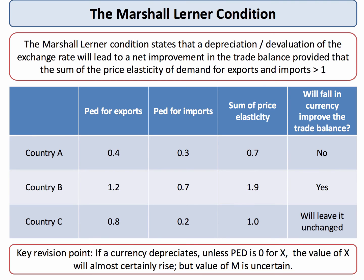A key revision point on the Marshall-Lerner condition: if a currency depreciates — for example, if the pound falls against the euro — unless the elasticity of demand for exports is zero, meaning there's absolutely no change in demand, then the value of exports we sell will almost certainly go up when the currency falls, because we're converting back into pounds instead of euros. But the value of spending on imports is uncertain. If the demand for imports is inelastic and the price goes up, your AS micro should tell you that total spending on imports will increase.